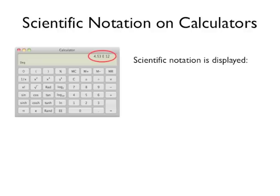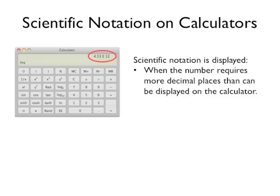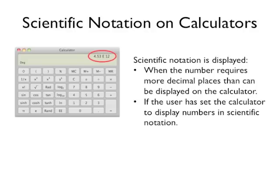Scientific notation is displayed on the calculator in two cases. First, when the number requires more decimal places than the calculator can display, or second, if the user has set the calculator to display numbers in scientific notation.